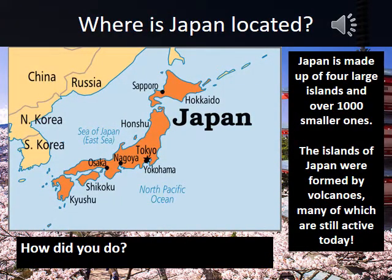There are four main islands in Japan, although there are over a thousand islands in the country in total. You've got Hokkaido in the north. Honshu is the main island and where the capital Tokyo can be found. Shikoku is the smallest island, and Kyushu is the furthest south. Japan is located on quite an unstable point in the Earth's crust and is frequently hit by earthquakes, as well as being home to several active volcanoes.